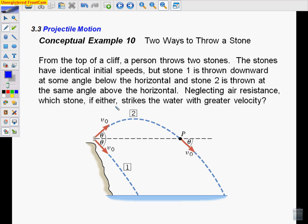One more example. Let's say we throw a stone off the top of a cliff and it lands in the water below. So we're going to throw it two different ways or two different stones, we'll say. One stone we're going to throw downward at an angle. The other stone we're going to throw upward at the same angle above the horizontal. So same initial speed or magnitude of velocity and same angle, but one's above, one's below the horizontal. So the question is, which one's going to strike the water with a greater velocity? Think about this. Pause if you need to.